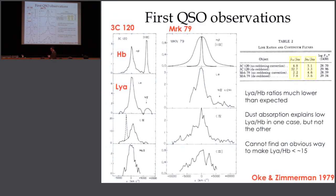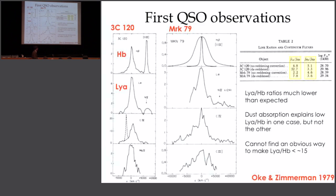If you de-redden the Lyman-Alpha flux and H-Beta flux, one of the two objects actually gets back to a ratio close to recombination — that one could indeed be explained largely by dust reddening. The other one manifestly could not.